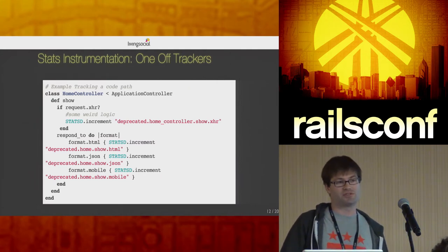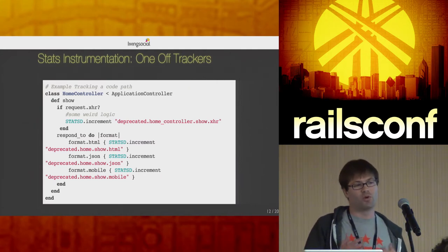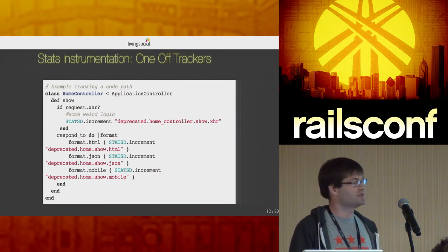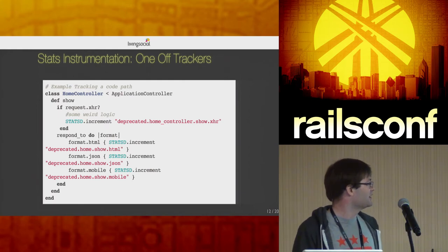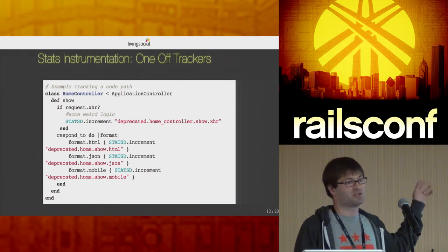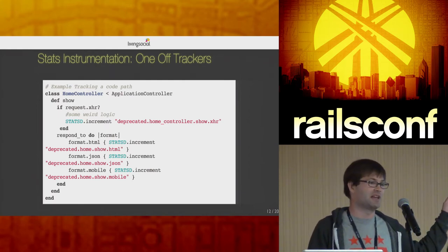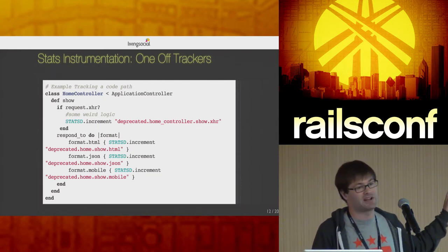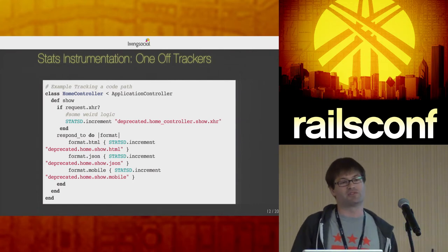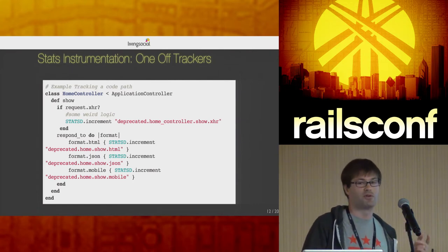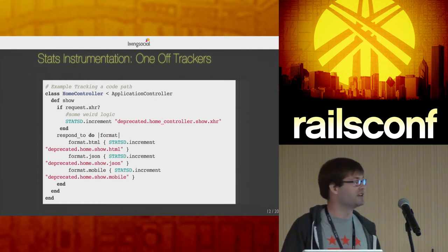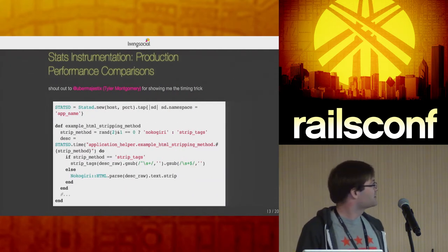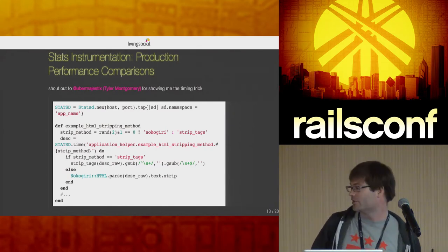For one-off trackers, sometimes you find code and aren't sure what's going on. With statsd it's easy to throw on one-off trackers. In this controller example we're trying to figure out which format paths are still being hit — we increment on each format in request.xhr, and now we can say 'we stopped using the JSON format months ago, let's get rid of all related code.'